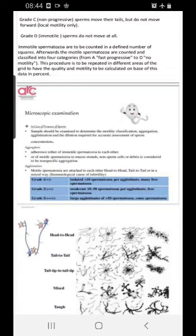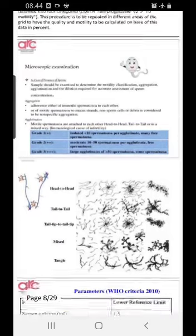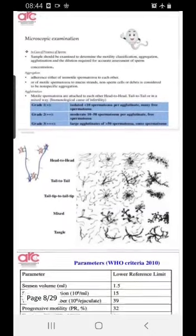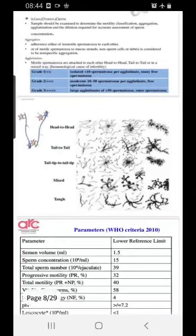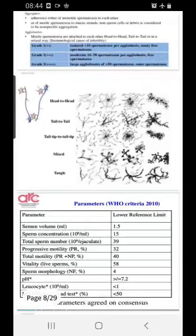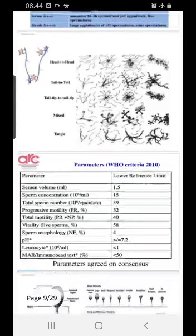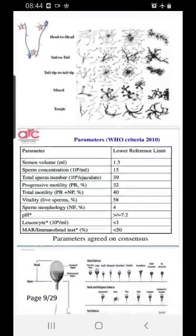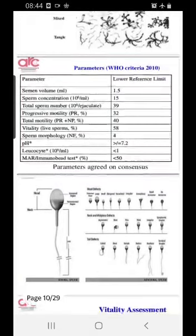Agglutination has become very important. You have to report how many sperms are agglutinated — graded as 1, 2, or 3. You also need to note the type of attachment: head-to-head, tail-to-tail, tip-to-tip, mixed, or tangled. This is the new advance that we have to report.